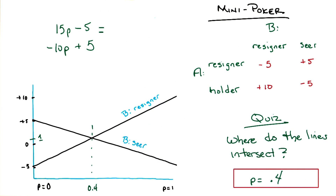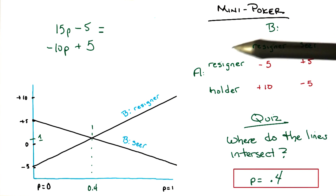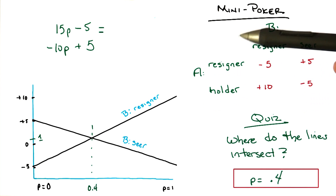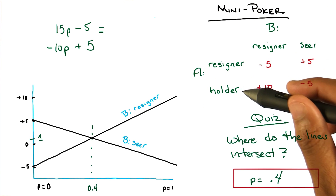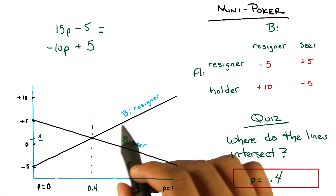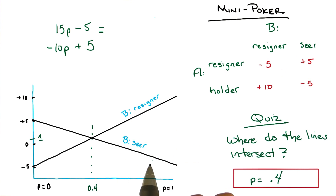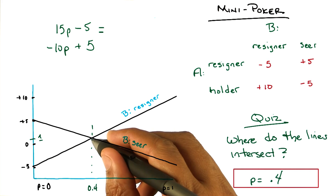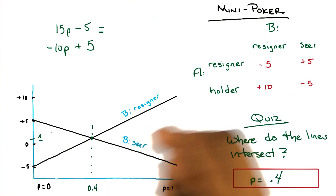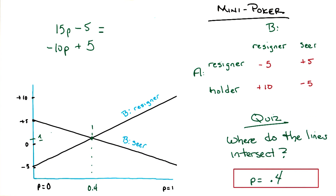Right, because they're equal there. That's actually the answer to the entire thing. If A chooses a mixed strategy where with probability 0.4 he chooses to be a holder, notice that it doesn't matter whether B is a resigner or B is a seer. You will end up with a value of plus 1 penny to A, on average. The expected value is plus 1.